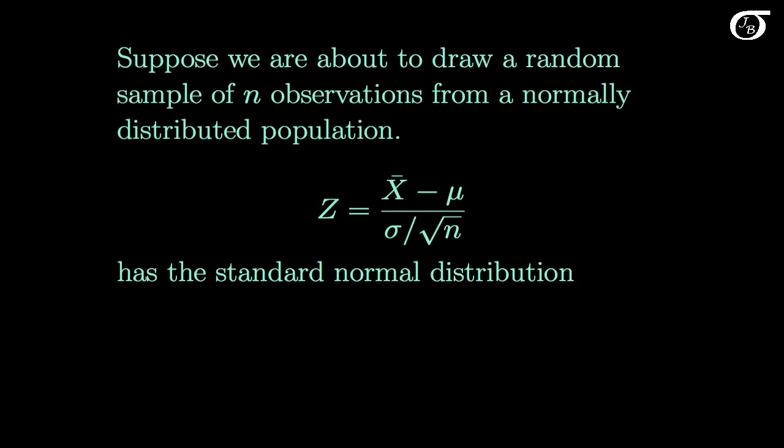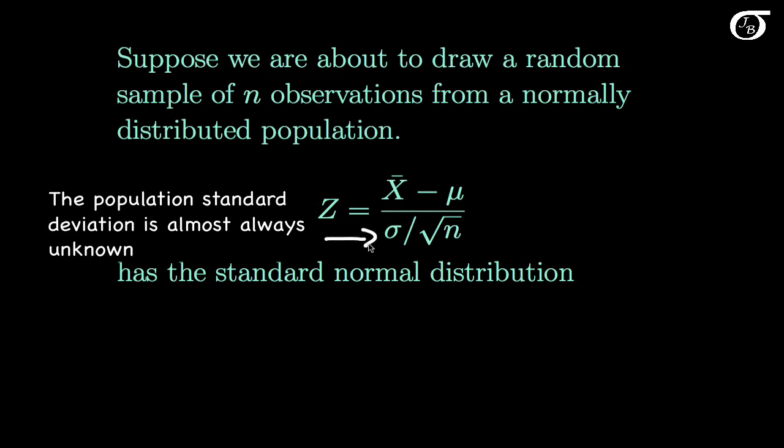Previously we've used this notion to construct a confidence interval for the population mean μ, but in practice we encounter a problem, and that problem is we don't know the value of the population standard deviation σ. Sigma is a parameter — the standard deviation for the entire population — and we don't typically know its value, so we can't use that value in a formula.